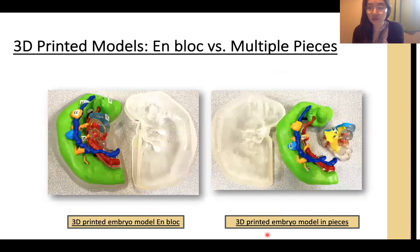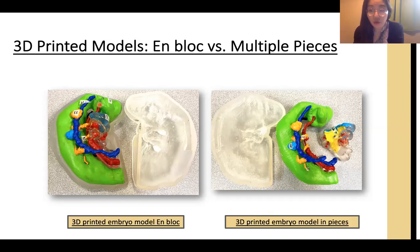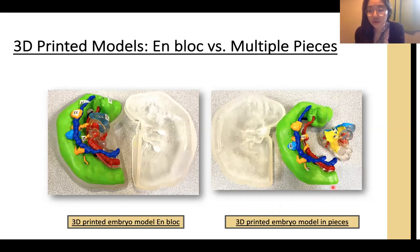We obtained histological slides from the Carnegie Collection, segmented and rendered them to make these 3D printed embryo models of the CS15 embryo head and neck region. We chose head and neck development because we wanted to help students visualize these complex structures within a small region to reduce their cognitive load. In this study, we also wanted to see how these interactive features would affect student learning and students' spatial understanding of embryonic anatomy.